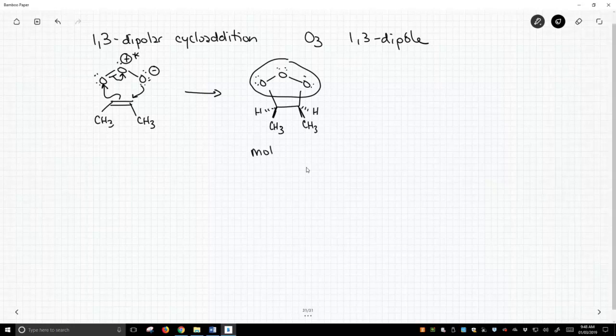People call this the molozonide. Another name for it is a trioxolane, a 1,2,3-trioxolane, if you're into naming these things. And very few people are. But this is unstable, and it is going to fall apart.